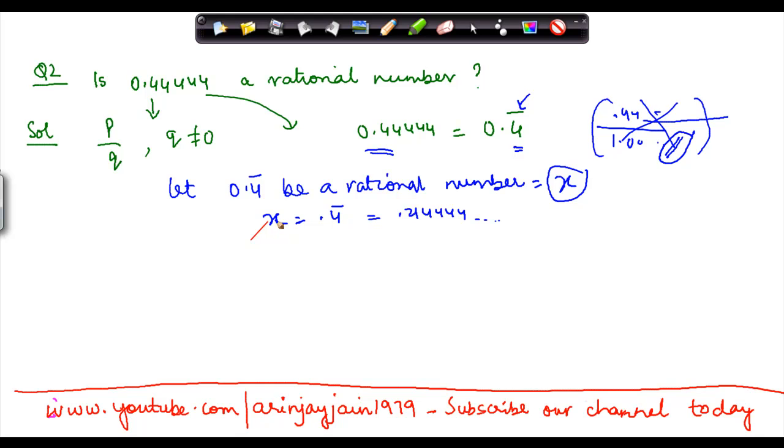Now thereafter, what we need to do is we need to put in step 1, wherein we multiply both the sides by multiples of 10. Now whether you need to multiply this by 10 or 100 or 1000 is a factor of how many repeating factors do you have here?